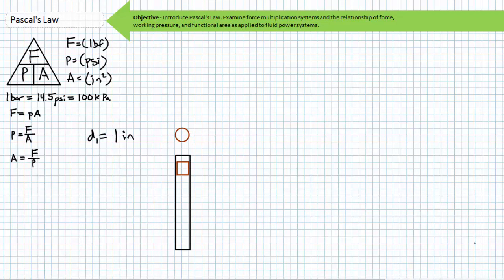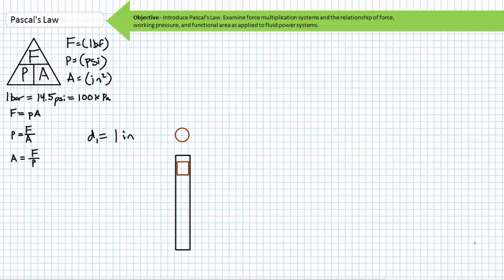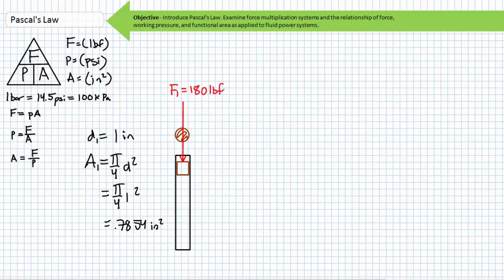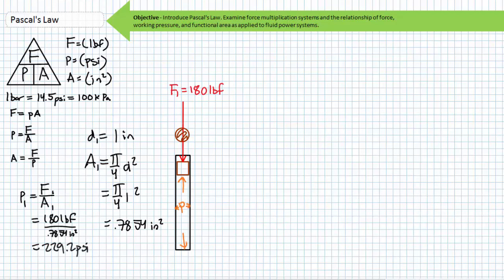Consider an important application of Pascal's Law to fluid power systems: force multiplication. Consider a movable piston face with a diameter of one inch inside a cylinder. Using our understanding of circular surface area, a piston with a diameter of one inch represents a surface area of pi over 4 times d squared, or approximately 0.7854 square inches. Consider a 180-pound person standing on this cylinder.